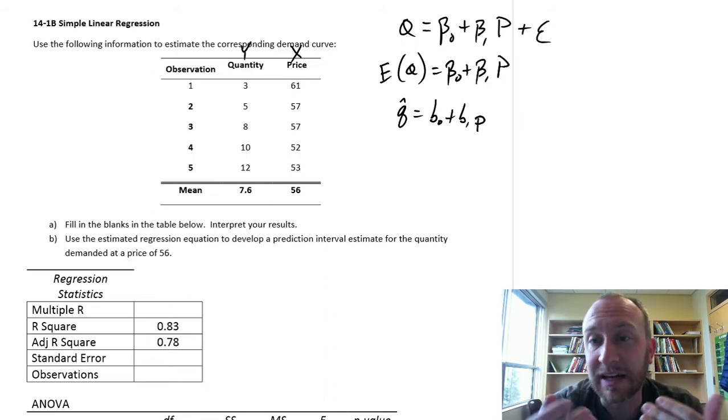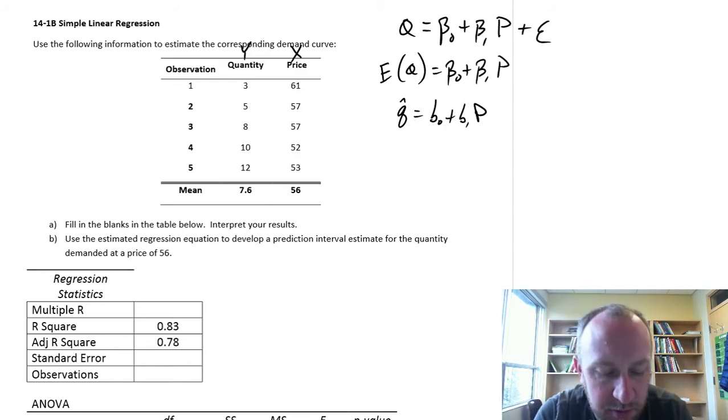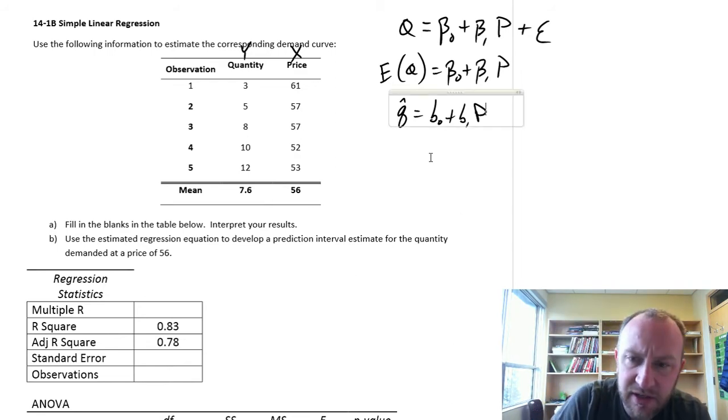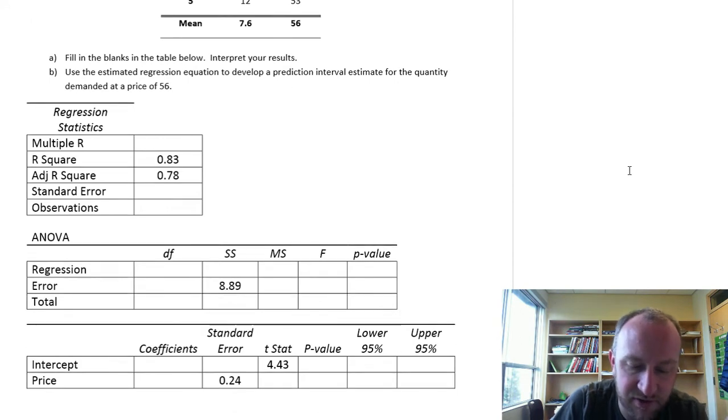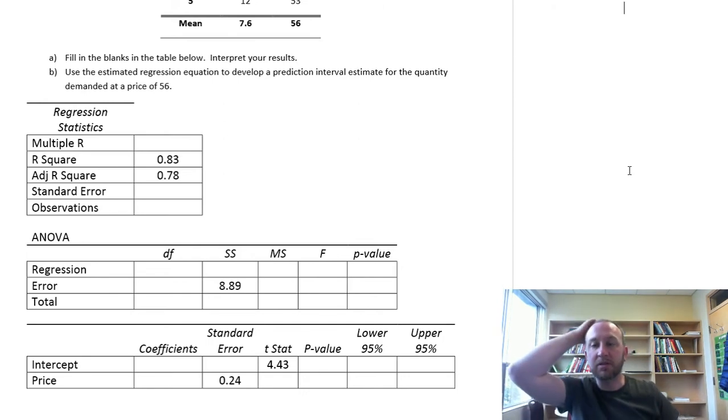So what we are estimating is that y intercept and slope coefficient. We have, as part of this problem, a nearly blank Excel output. What we're going to do is just fill in the blanks. I'll probably break this up into two or three videos because I don't want to spend an hour in one video going through all of this.